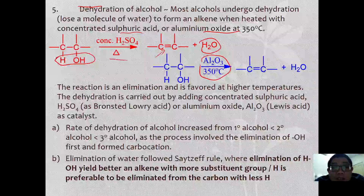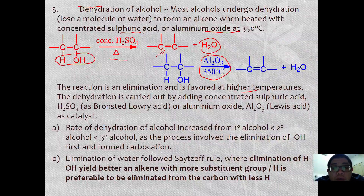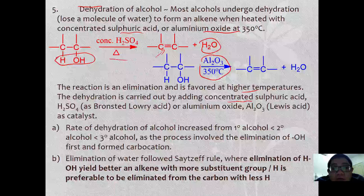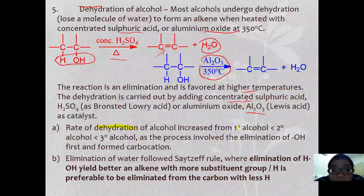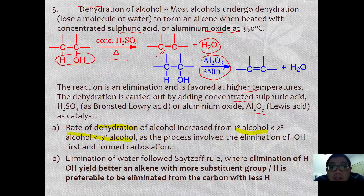This reaction is elimination and it favours higher temperature. Dehydration is carried out by adding concentrated sulfuric acid, which acts as a Brønsted-Lowry acid, or aluminum oxide, which can also act as a Lewis acid catalyst. The rate of dehydration of alcohol increases from primary to secondary to tertiary alcohol. In other words, tertiary alcohol is the most preferable to be dehydrated.